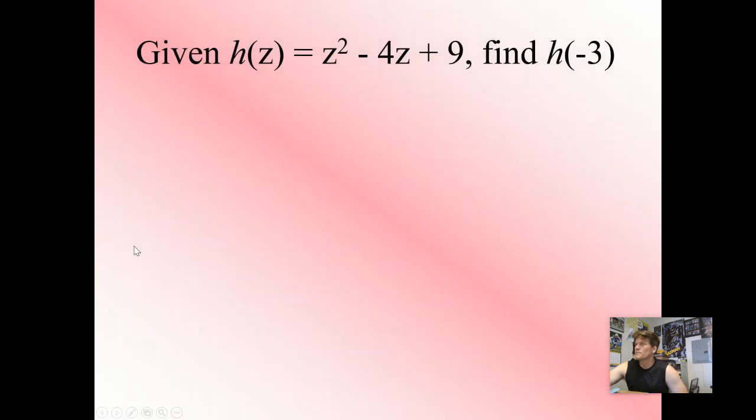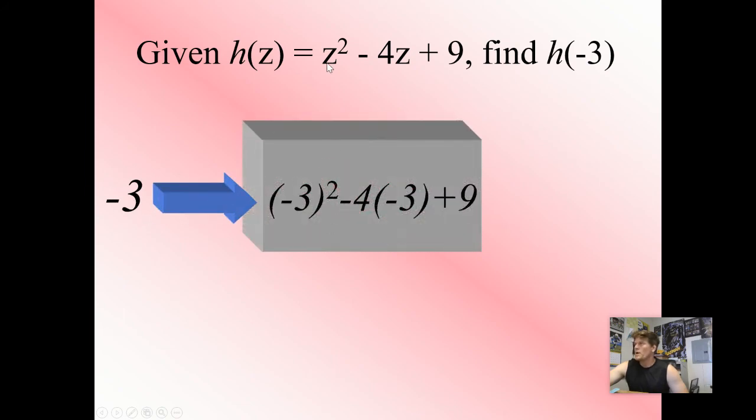Let's do some more. Here's a crazier-looking one, but it's the same kind of idea. We're going to find h(-3) just by taking our value and plugging it into my function. Whenever I see that variable, that's what I replace with my input. So now I have (-3)² instead of z². I have -4 times -3 instead of -4 times z, and I have the plus 9 just like before. -3 squared means -3 times -3. Multiply those together, you get positive 9. -4 times -3 gets you positive 12. So you end up having 9 plus 12 plus 9. That gives me an output of 30. So h(-3) = 30.